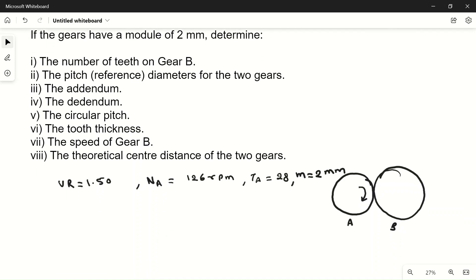We have to find various parameters. Number of teeth on gear B: velocity ratio is equal to NA upon NB which is equal to TB upon TA. 1.50 is equal to TB upon 28, so TB is 1.50 into 28, which is equal to 42. So gear B has 42 teeth.